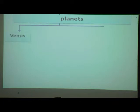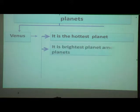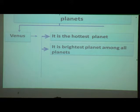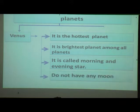Now we will see about Venus. It is the hottest planet in the solar system and the brightest planet amongst all planets. Because it is the hottest planet, it is also the brightest. It is called the morning and evening star. Venus does not have any moon.